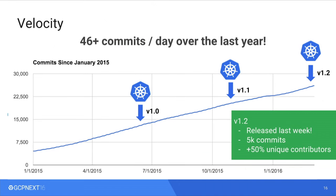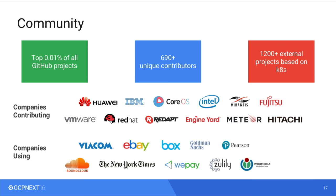One thing I'd really like to highlight here is the velocity. We're doing 46 commits a day, averaged across the weekend. The velocity with which we are doing this is amazing. At the same time, we're seeing new people come into the community — really excited to see all of the companies that are not just using but contributing as well. We really want to build a community that isn't just Googlers throwing code over the wall, but is truly holistic. As part of that, we've contributed Kubernetes to the Cloud Native Computing Foundation, so the intellectual property around Kubernetes is now available to the Linux Foundation.